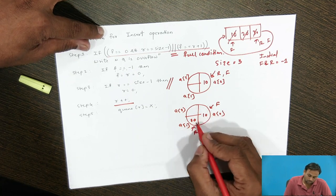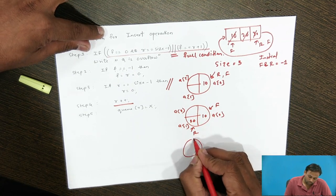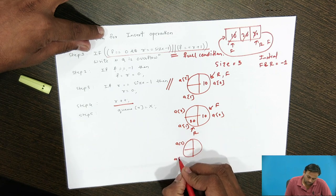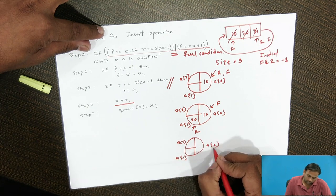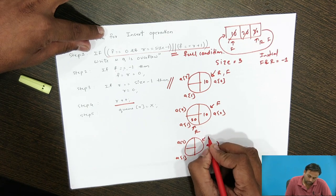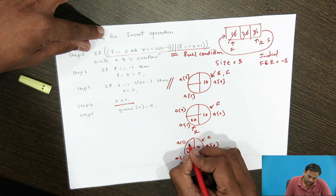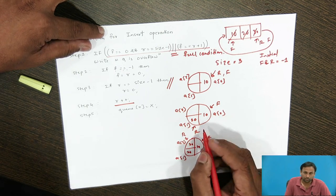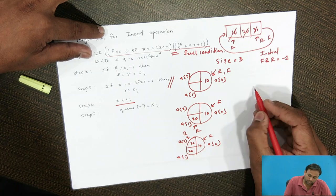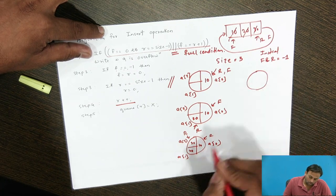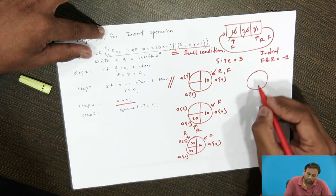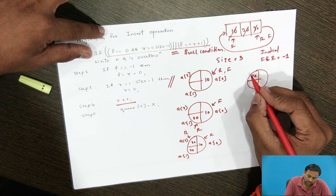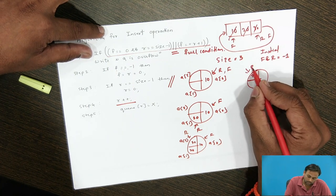Suppose we insert 10, 20, and 30. R will be at the last position. Now the queue is full. If you want to insert 40, you cannot, because R is pointing to A[2] which is position 2, and size - 1 = 2. So the full condition is satisfied and we cannot insert new data.